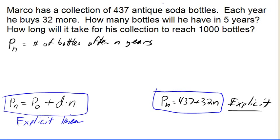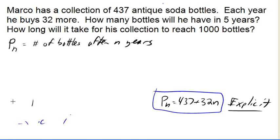So our general form of the explicit, in our particular case, that's the equation. If I want to know the population, how many bottles he will have in five years—so five is a value for n, the number of years. I want to know how many bottles, I want p, the number of bottles, after five years.